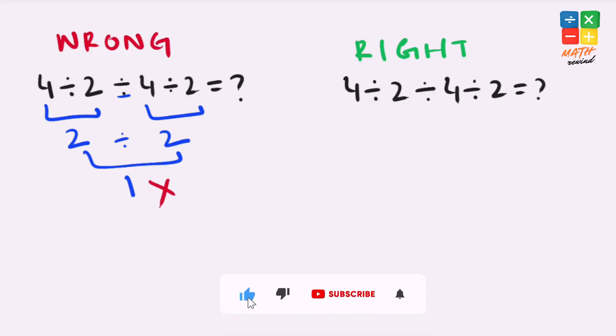according to the order of operations, if you have more than one division operator present in an expression, you must work from left to right.